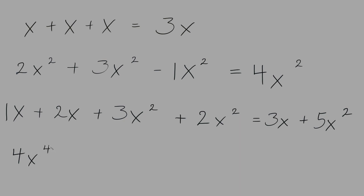4x to the power of 4 subtract 3x to the power of 3 plus 2x squared subtract 1. In this example we have three terms with the variable x, but because of the different exponents in each term they are not like terms, and the minus 1 has no variable or exponent at all. So these terms cannot be combined — we just leave it the way it is. When adding or subtracting variables with exponents, you must have exactly the same variables and exactly the same exponents in the terms being added or subtracted.